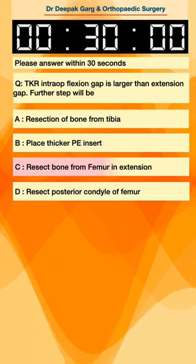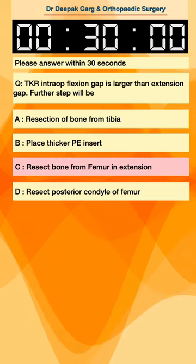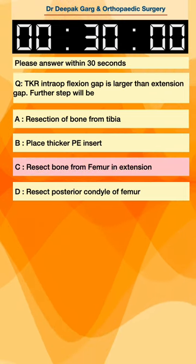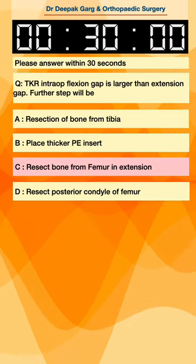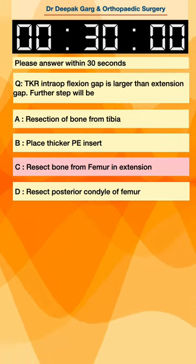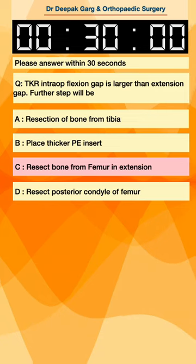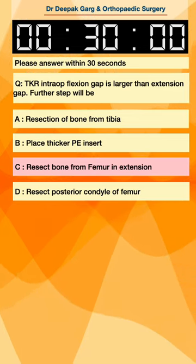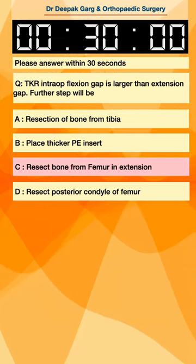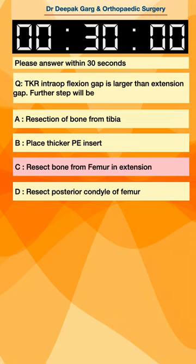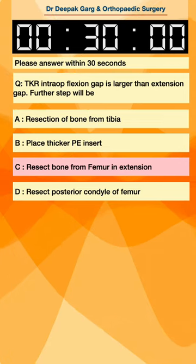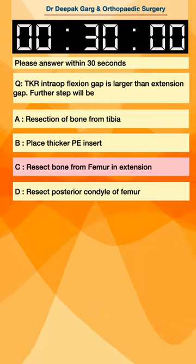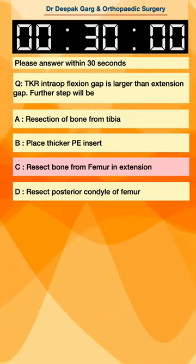The answer is to resect bone from the femur in extension. Because we have a larger flexion gap, we want extra extension gap, so we resect the femur in extension — this will equalize the flexion and extension gap.